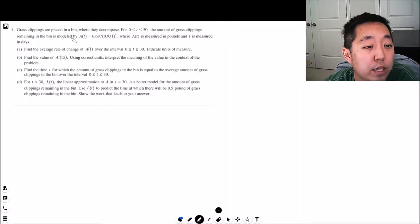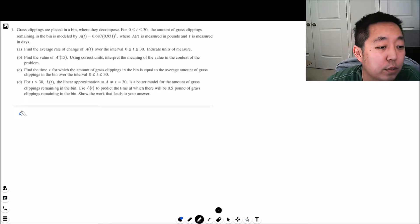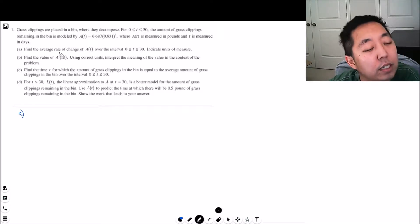Grass clippings are placed in a bin where they decompose. For 0 ≤ t ≤ 30, the amount of grass clippings remaining in the bin is modeled by A(t), where A(t) is measured in pounds and t is measured in days. Find the average rate of change of A(t) over the interval 0 to 30. The first question is almost always a rate question. For average rate of change, it's a secant line slope. Instantaneous rate of change is where we do derivatives, but there's no derivatives here.